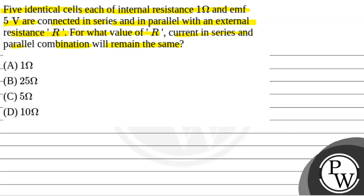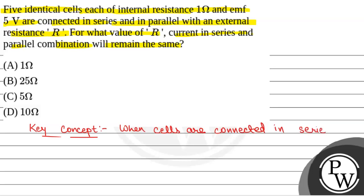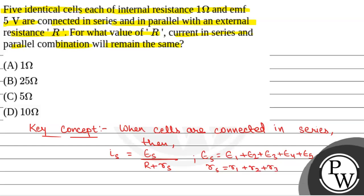We will solve this question. First of all, we will see what the key concept is to solve this question. The key concept is: when cells are connected in series, the current in series connection IS is given by ES divided by R plus RS, where ES is the equivalent EMF equal to E1 plus E2 plus E3 plus E4 plus E5, and RS is the equivalent internal resistance equal to R1 plus R2 plus R3 plus R4 plus R5, and R is the external resistance.